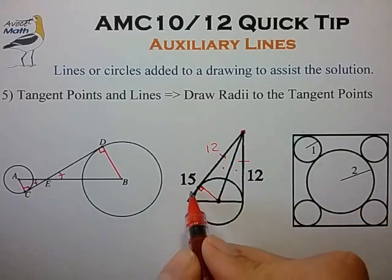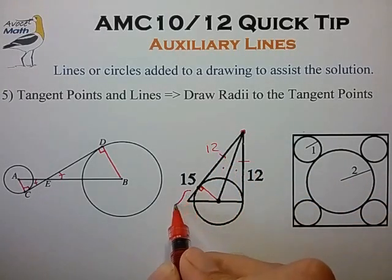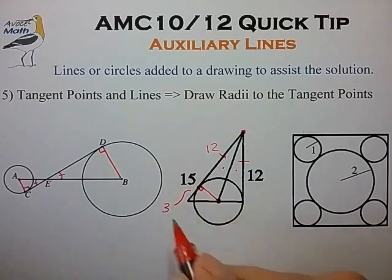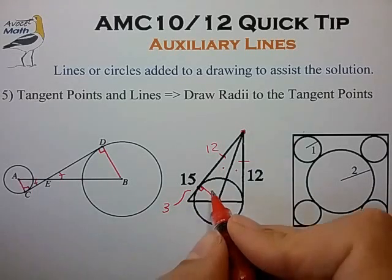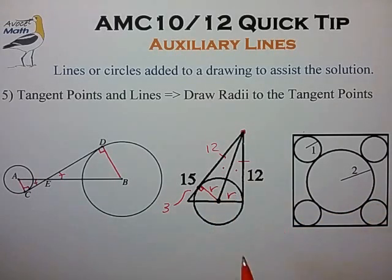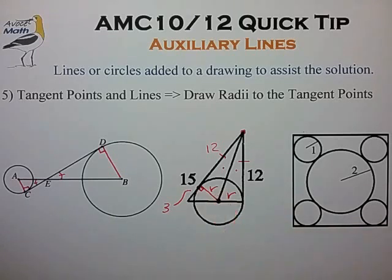We can quickly work out that this additional line segment is of length three, and it seems like we can use all this information to deduce the radius of the circle. See if you can work that out for yourself.